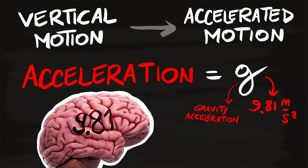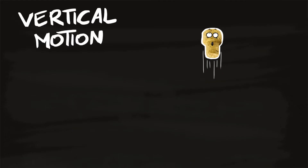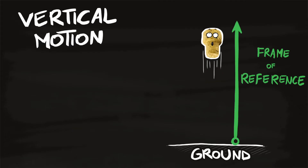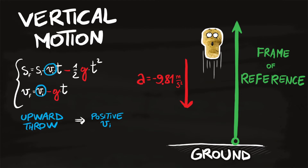Brand this number — 9.81 — on your neurons, because it will show up a lot in physics. When dealing with vertical motion, place the frame of reference on the ground and direct it upwards, so the acceleration is actually negative: -9.81 m/s². The initial velocity vi is positive if the body is thrown upwards, and negative if thrown downwards.